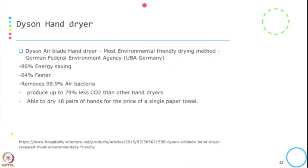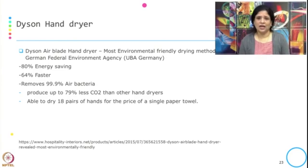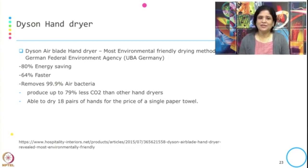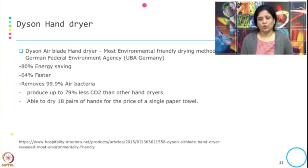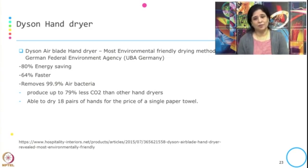The other example is the Dyson Airblade Hand Dryer, certified by the German Federal Environmental Agency (UBA Germany) as the most environmentally friendly drying method compared with paper towels, cotton towels, and other standard dryers. Energy saving from the Dyson Airblade is 80 percent; it is 64 percent faster, removes 99.9 percent of air bacteria, and produces up to 79 percent less CO2 than other hand dryers. It is able to dry 18 pairs of hands for the price of a single paper towel, making it not only environmentally friendly but also cost-effective.